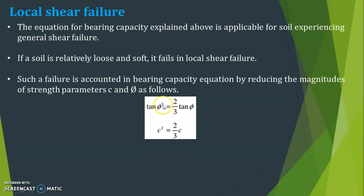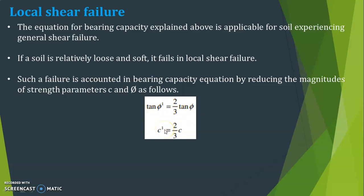For local shear failure, tan φ' = (2/3) tan φ, and c' = (2/3) c. In general shear failure you can directly use the values of φ and c, but in local shear failure you must use φ' where tan φ' = (2/3) tan φ, and c' = (2/3) c. This is the key difference between general shear failure and local shear failure.